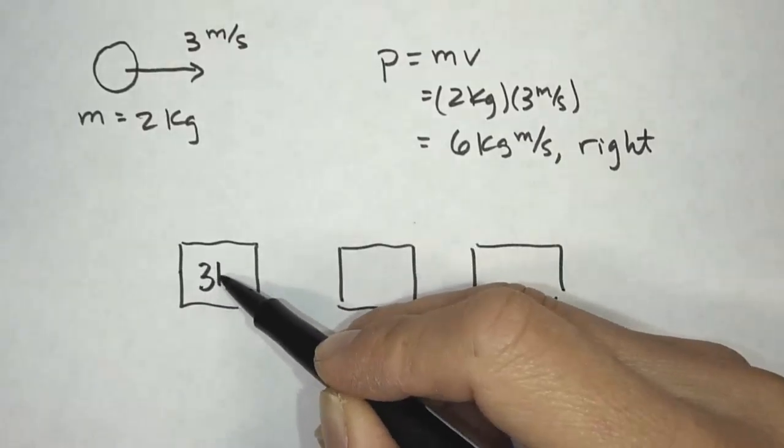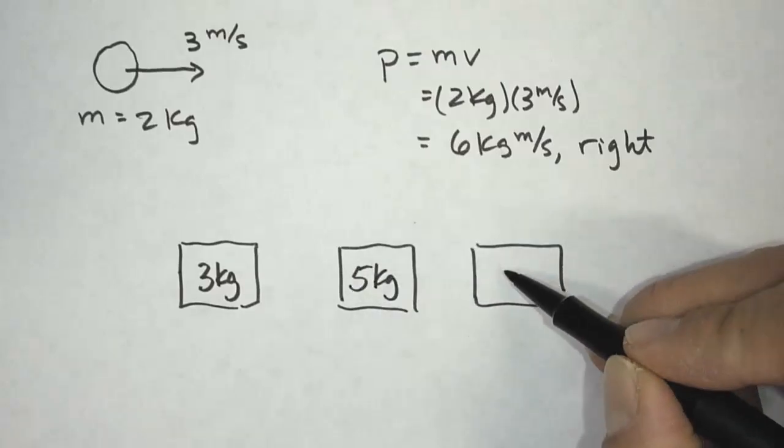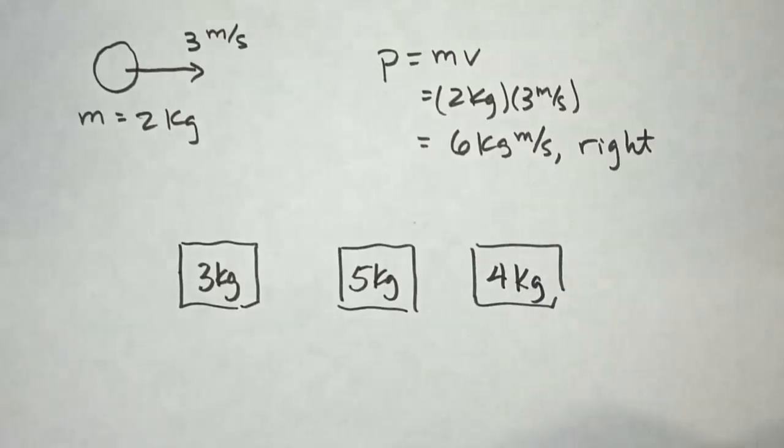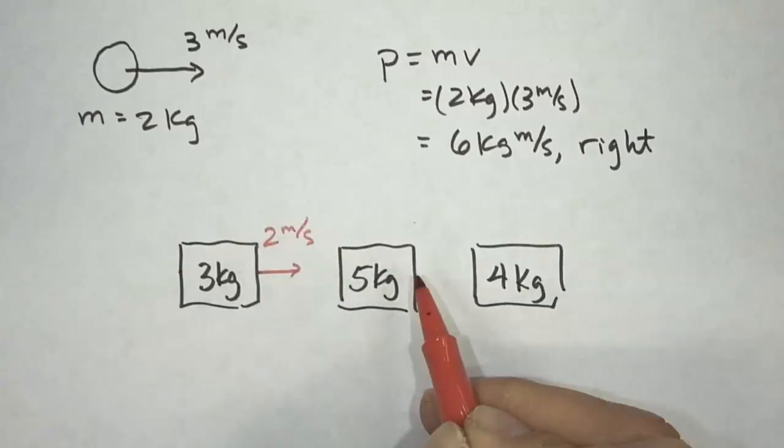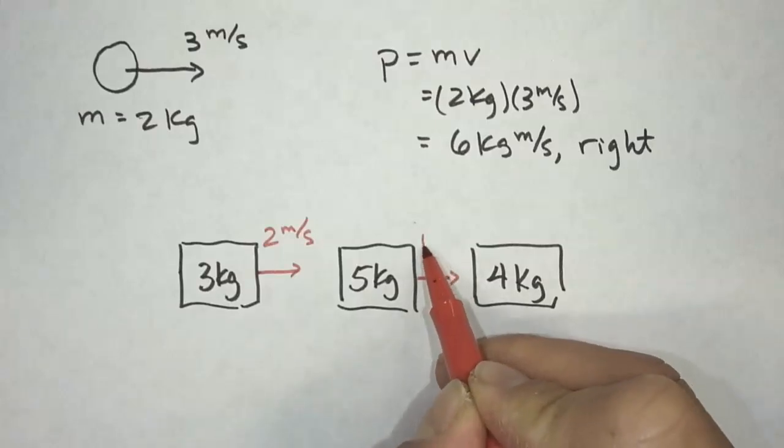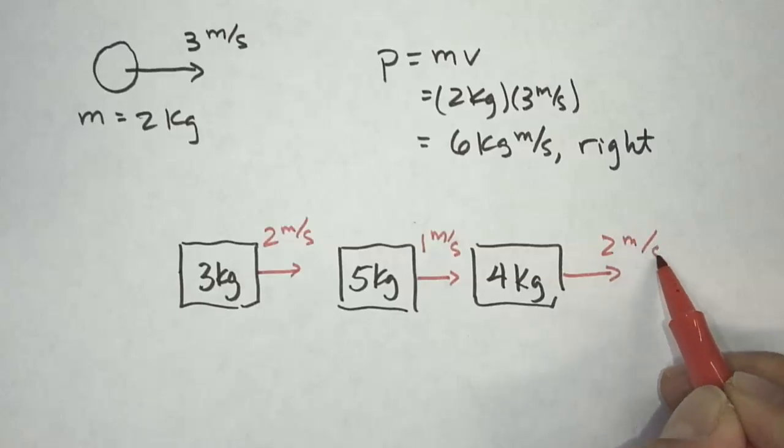Okay, so this first one has a mass of 3 kilograms, 5 kilograms, and this one has a mass of 4 kilograms. And what we want to do is we want to compare the momentum of these objects. Now in order to calculate their momentum, we also need to know how fast they're moving. So this one's moving at 2 meters per second, this one's moving at 1 meter per second, and this one's moving at 2 meters per second. And the arrows, I didn't draw them in scale. I'm just indicating the direction with the arrows.